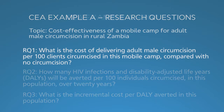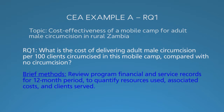For question one on the cost of delivering circumcision services, the brief methods would probably start by reviewing financial and service records from an operating program — typically done for a 12-month period because we are in the habit of financing programs and making reports on fiscal years. We quantify the resources used and the associated costs, as well as clients served.